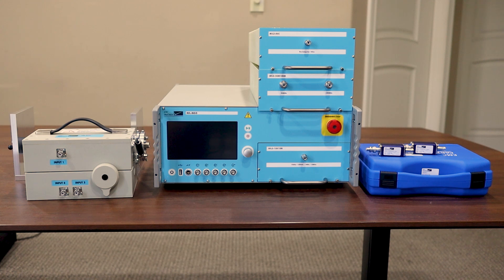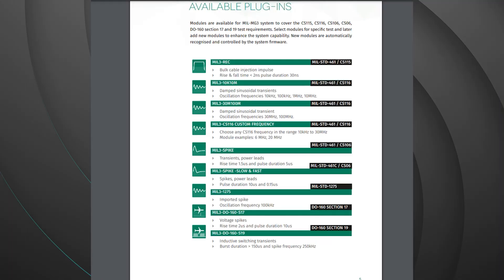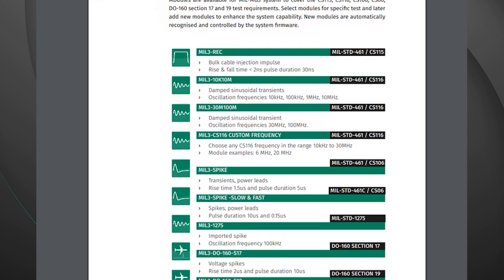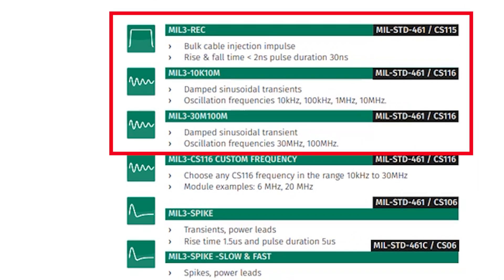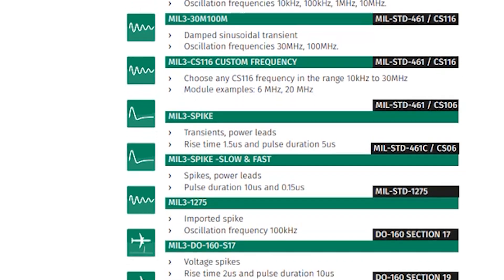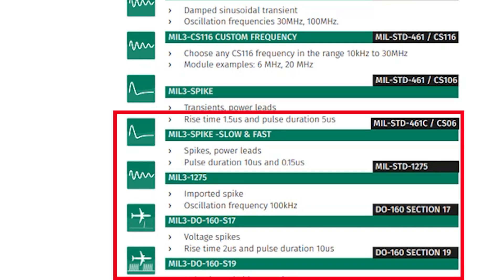The MIL-MG3 system provides capabilities for a variety of different immunity testing requirements for both military and avionics. The capabilities can be switched by swapping out the module on the front of the system. Looking at the military test systems brochure from EMC Partner, here's a list of the available plug-ins. For today's video we have the top three, designed for MIL-STD-461 CS-115 and MIL-STD-461 CS-116 testing. There are also capabilities for CS-06, MIL-STD-1275, and DO-160 sections 17 and 19.